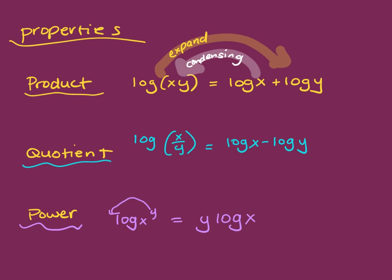So this one's a little less obvious to tell the difference between expanding and condensing. But if there's an exponent, then you would expand it. And if there's a number on the front, you would condense it. So a product becomes addition, a division becomes subtraction, and a power becomes multiplication.